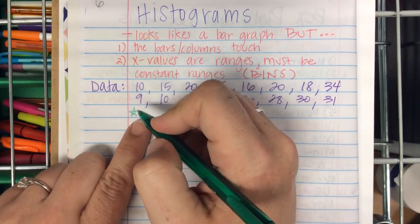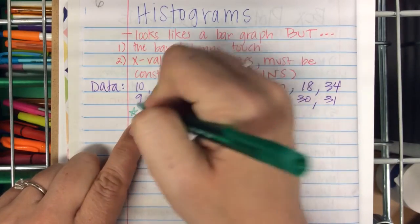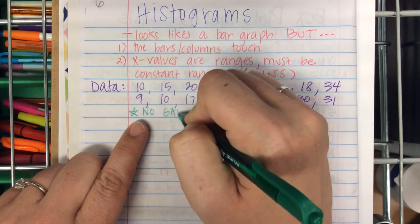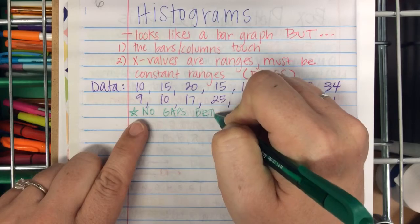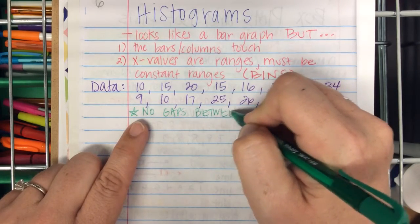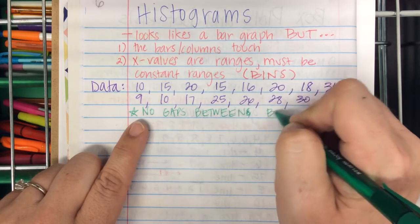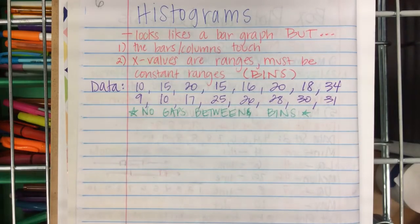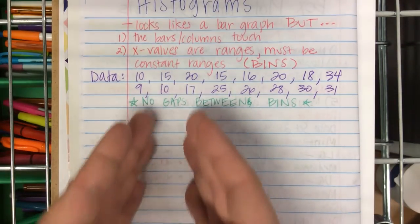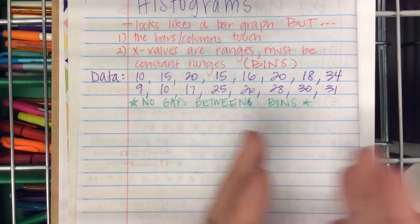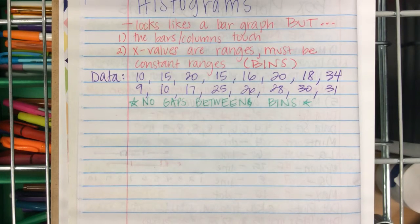Part of what you want to try your hardest at, and it's sometimes difficult, is no gaps between bins. Right, you don't want to have a bar, and then a space, and then the rest of your data in bars. You want all of it to be touching. Now, sometimes that doesn't happen, and we have to reconfigure some stuff.